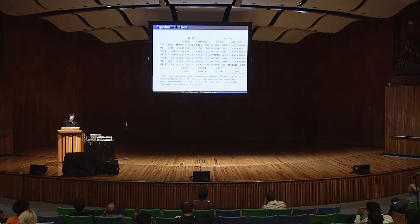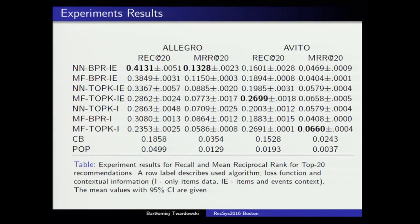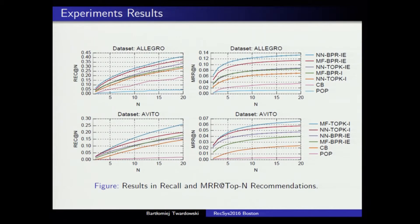However, for Avito, matrix factorization is still the better one. Two things worth mentioning: first, there was no hyperparameter optimization phase in this work. Second, when I investigated the Avito data, it turns out that those search events are actually mostly subcategories and regions — mostly tree navigation. Here we also see the dependency from output length.